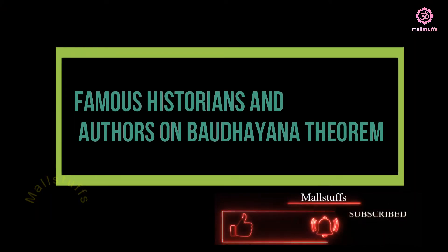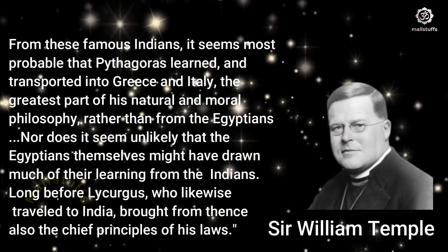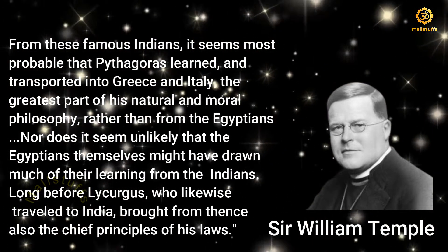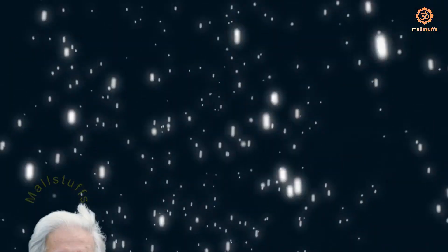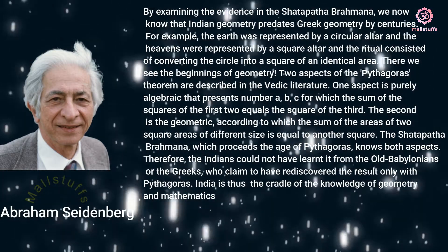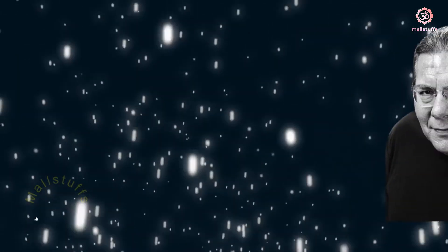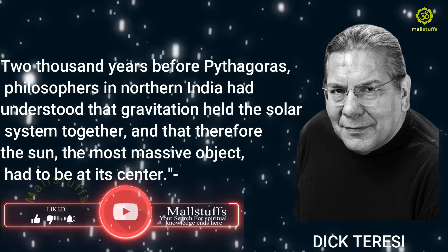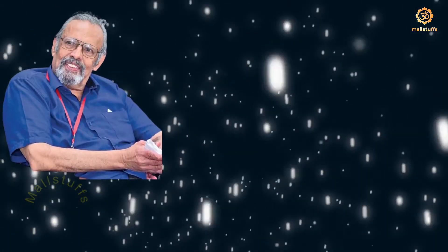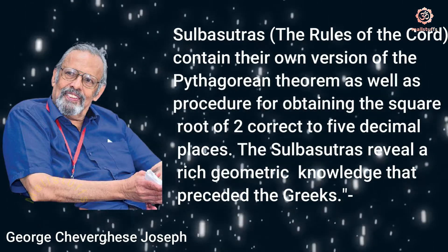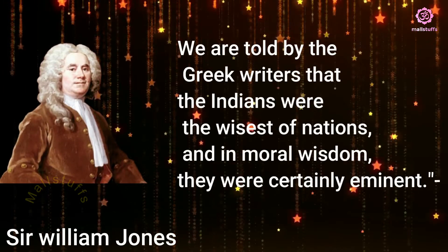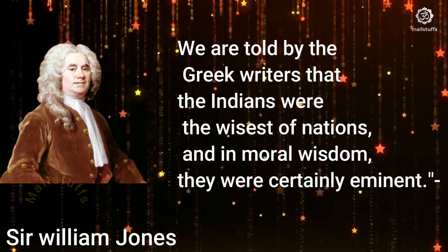Famous historians and authors on the Bodhayana theorem: Sir William Temple said it is most probable that Pythagoras learned from India and transported his theories to Greece and Italy, and that Egyptians themselves might have learned from the Indians. Abraham Seidenberg said Indian geometry predates Greek geometry by centuries, and India is the cradle of knowledge of geometry and mathematics. Dick Teresi said long before Pythagoras, philosophers in northern India had understood gravitation and the solar system. George Thibaut said Sulbasutra contains their own version of the Pythagoras theorem as well as a procedure for obtaining the square root of 2 correct to 5 decimal places. Sir William Jones said the Greek writers themselves said that Indians were the wisest of nations and in moral wisdom they were certainly eminent.